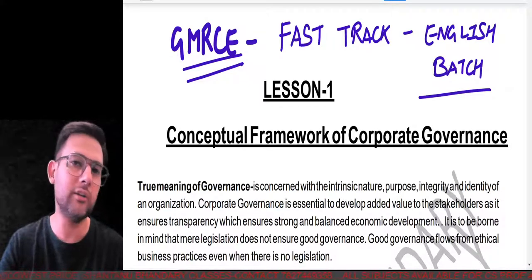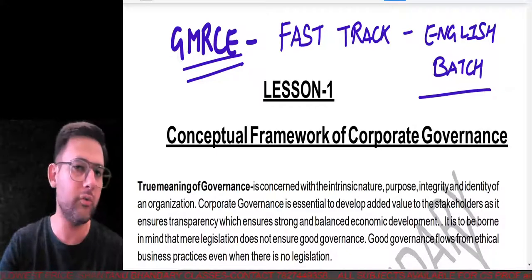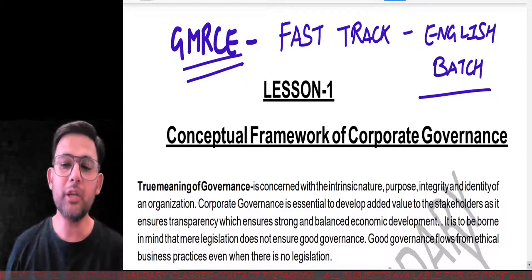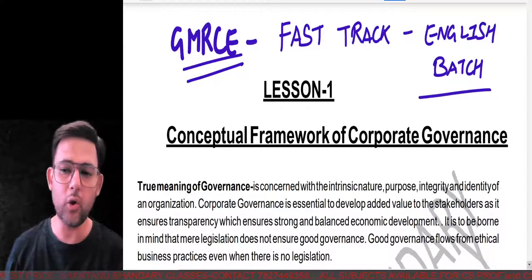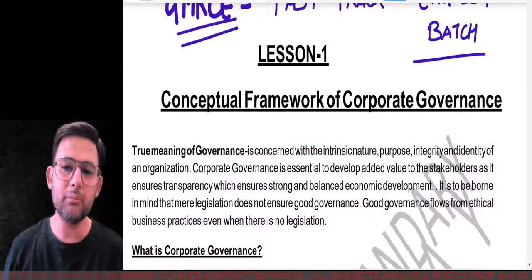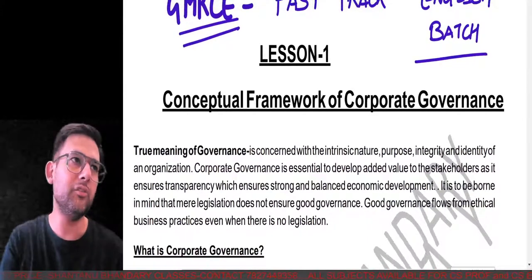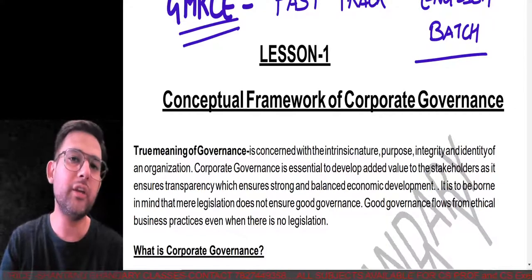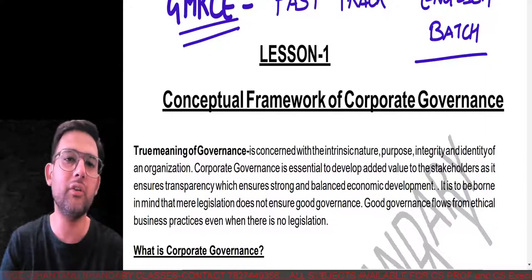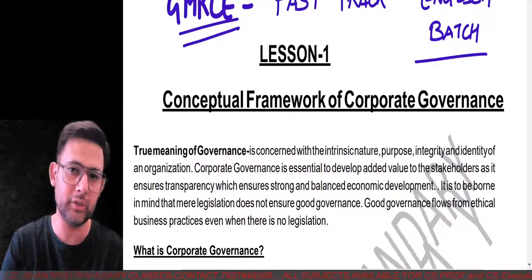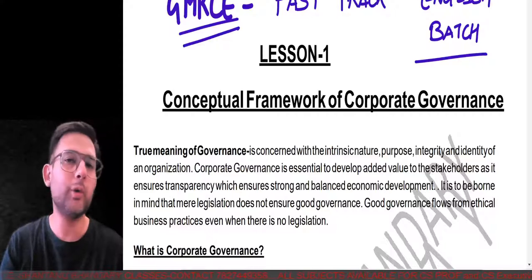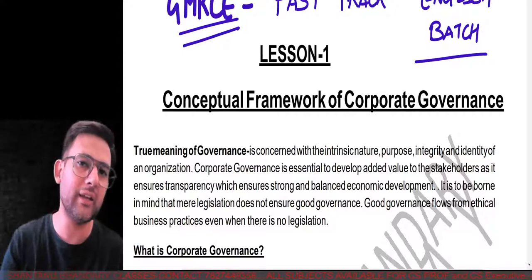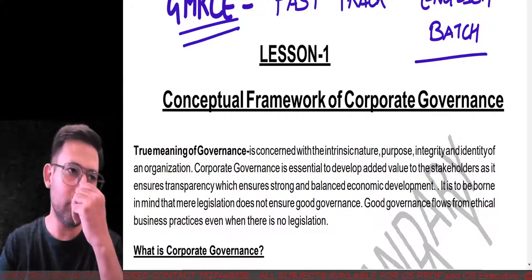Now it's time to start the first chapter of Governance, Risk Management, Compliance and Ethics — CS Professional Group 1. The chapter name is Conceptual Framework of Corporate Governance. Different terminologies have been given throughout the chapter. Different experts have given different meanings of the word corporate governance — some in just two lines, others up to ten lines.